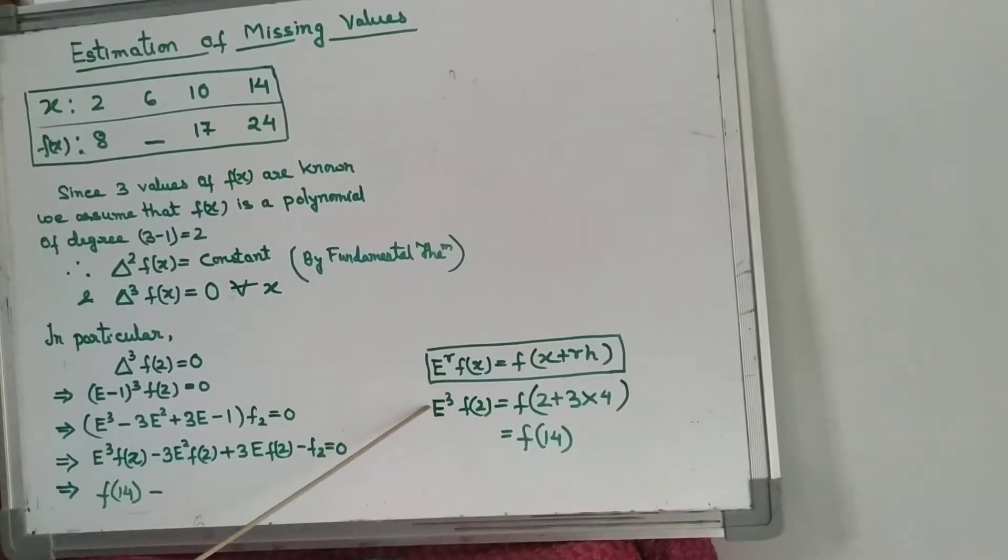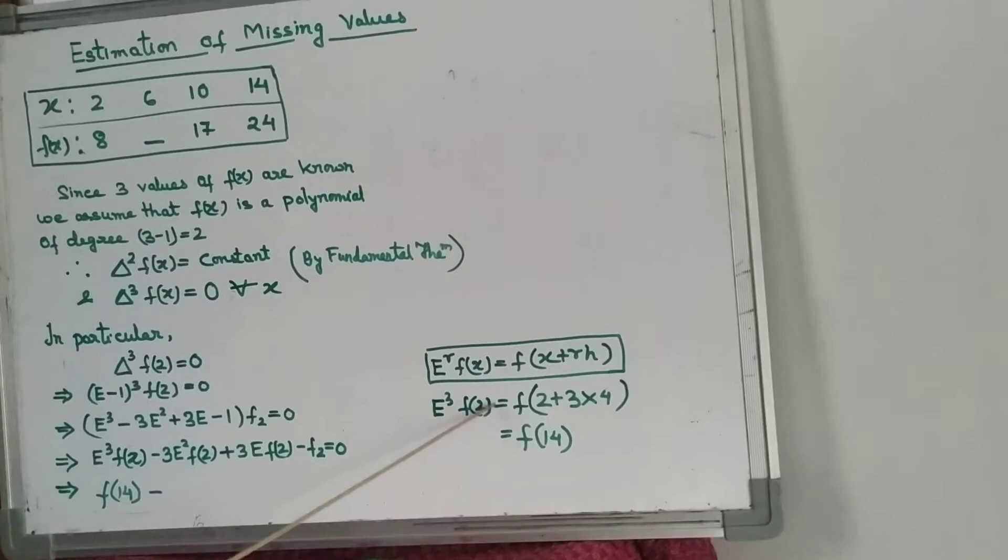Here the power R is 3, so E^3 f(2) means we apply the E operator over f(2). It will be x plus Rh, where R is 3 and h is 4 (because the interval of difference is 4). So 2 plus 3 times 4 equals 14. Therefore E^3 f(2) equals f(14).